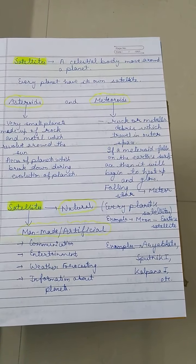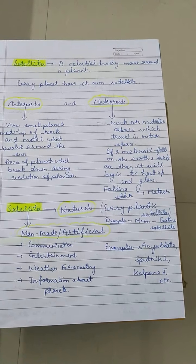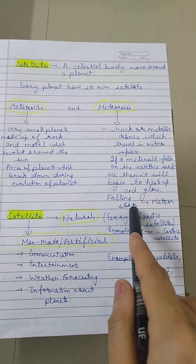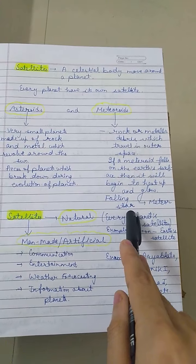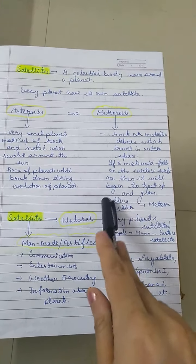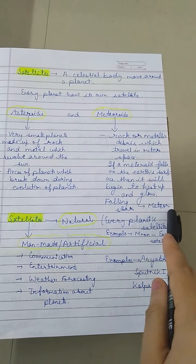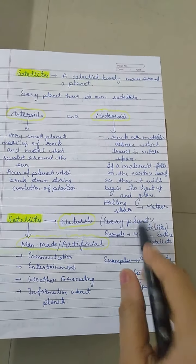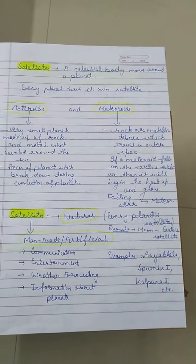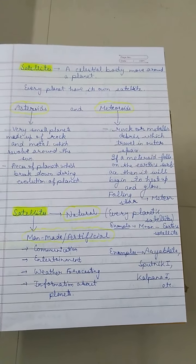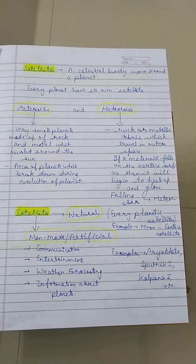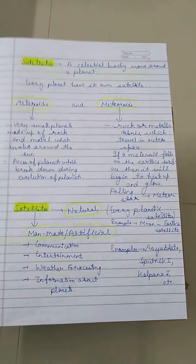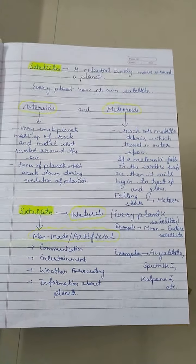Students, have you ever heard the word 'falling star'? In Hindi we can say 'Tuta Tara.' Yes, it is not actually a star — it is a meteoroid that falls on a particular surface. I hope in this video you got to know about satellites, asteroids and meteoroids. Thank you.